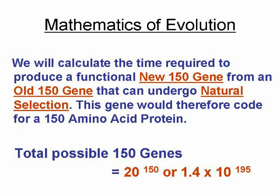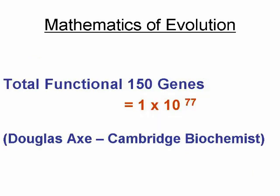Since each codon on the gene could code for one of the 20 different amino acids, the amount of possible proteins that could be formed is 20 to the 150, or 1.4 × 10^195 proteins. Current scientific findings have shown that one in every 10^77 proteins formed from a 150 amino acid protein molecule is functional.